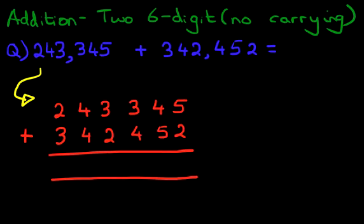And now we are simply going to add the columns one by one, starting with the column on the right-hand side first, the units column. Here it is, 5 plus 2 is 7.